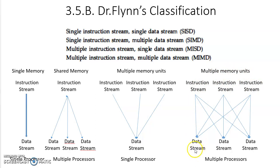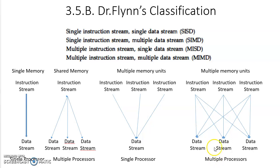MIMD — multiple instruction stream, multiple data stream — requires multiple memory units and multiple processors. These processors receive instructions from different memory units and execute them in different processors. For this kind of parallel processing, a complex control unit is essential to coordinate between the memory units and processors. Parallel processing reduces the time that serial processing takes and increases the throughput.